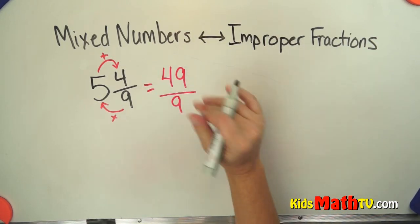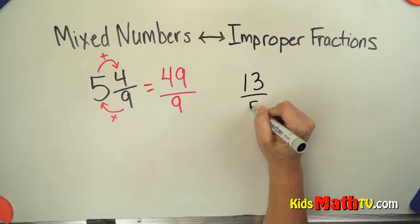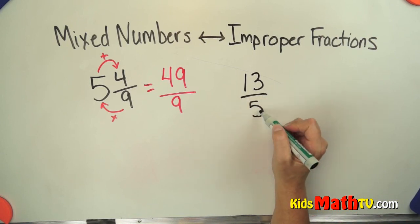To go from an improper fraction to a mixed number, let's say we have 13 over 5. We look at this as a division problem. 13 divided by 5.